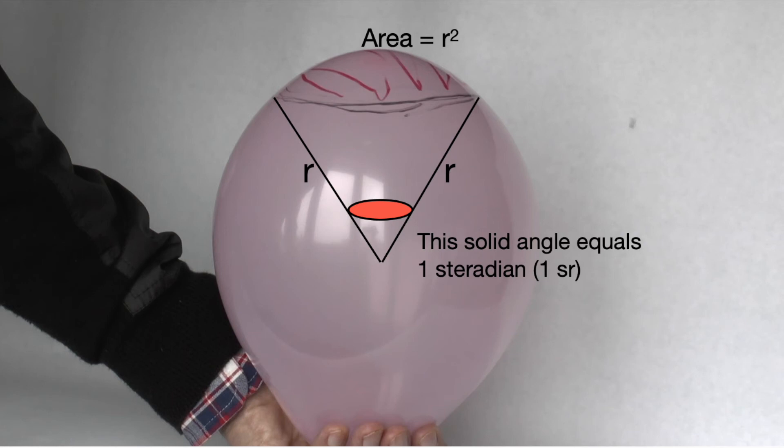It is the angle at the center of a sphere subtended by a part of the surface equal in area to the square of the radius.